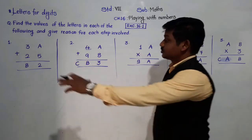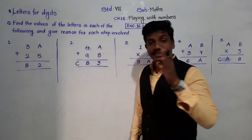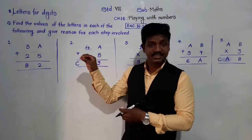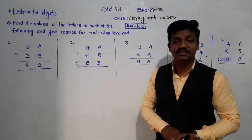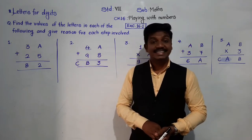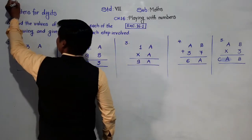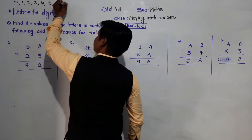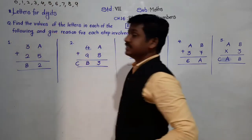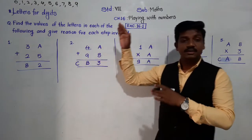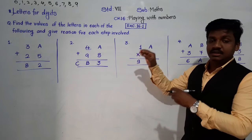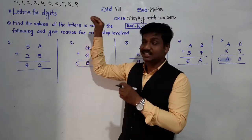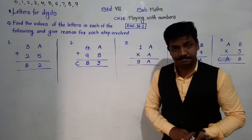This is very easy. The only thing you must know is the tables of the digits. You know how many digits we have in our number system? There are 10 digits: 0, 1, 2, 3, 4, and up to 9. Whatever alphabets are given, these digits will replace those alphabets.